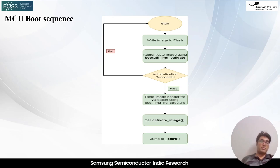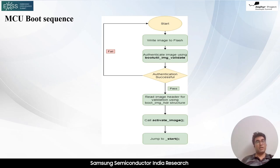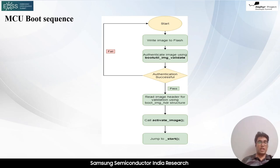MCU boot initially boots from the primary application slot, assuming it contains a valid and authenticated application image. MCU boot then validates the image in the primary application slot using cryptographic signatures or checksums, verifying the integrity and authenticity of the image to ensure it hasn't been tampered with. Based on the result of image validation, MCU boot determines the boot configuration. If the primary application image is valid and authenticated, MCU boot transfers control to the primary application entry point. If the application image is invalid or not present, MCU boot falls back to the secondary application slot.